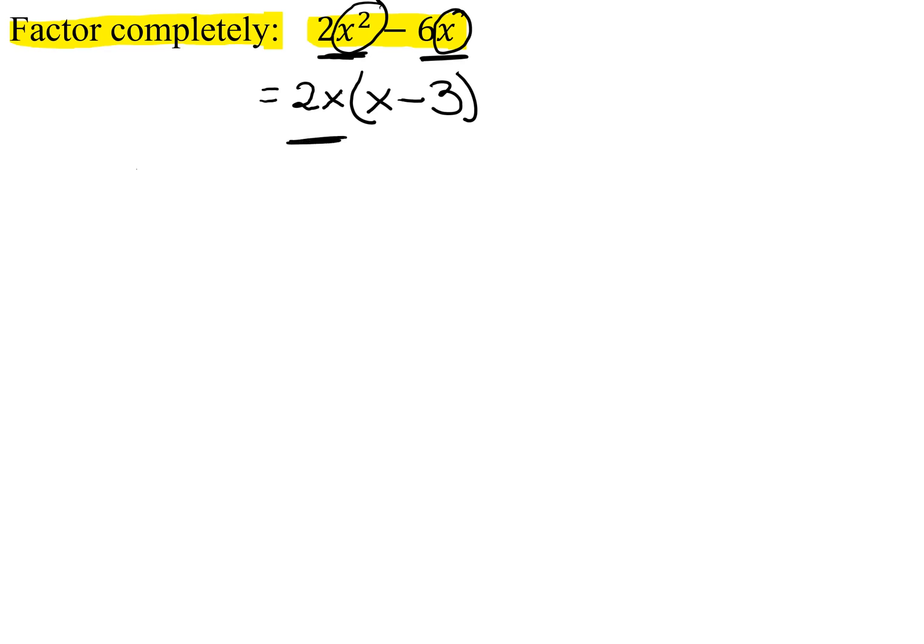Once we've factored out our GCF, then we have to look at the resulting expression to see if it can be factored any more. The x minus 3 has no common factors. It's a linear expression, it's not quadratic, so we've factored this as much as possible.